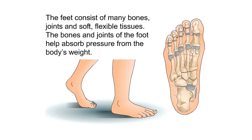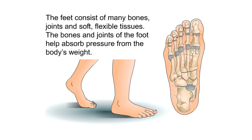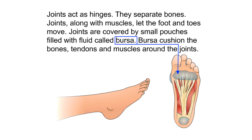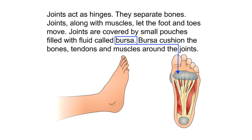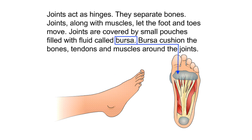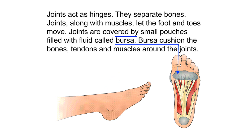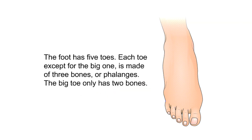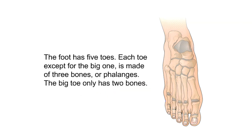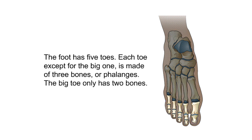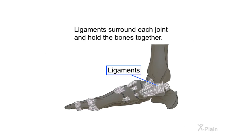The feet consist of many bones, joints, and soft flexible tissues. The bones and joints of the foot help absorb pressure from the body's weight. Joints act as hinges — they separate bones, and along with muscles, let the foot and toes move. Joints are covered by small pouches filled with fluid called bursa, which cushion the bones, tendons, and muscles around the joints. The foot has five toes; each toe except the big one is made of three bones, or phalanges. The big toe only has two bones. Ligaments surround each joint and hold the bones together.